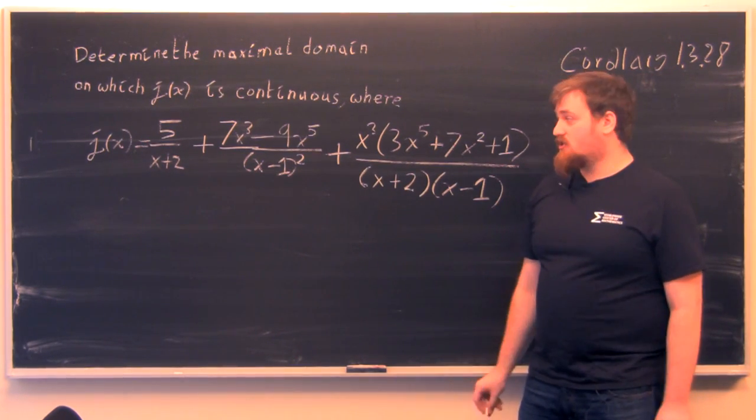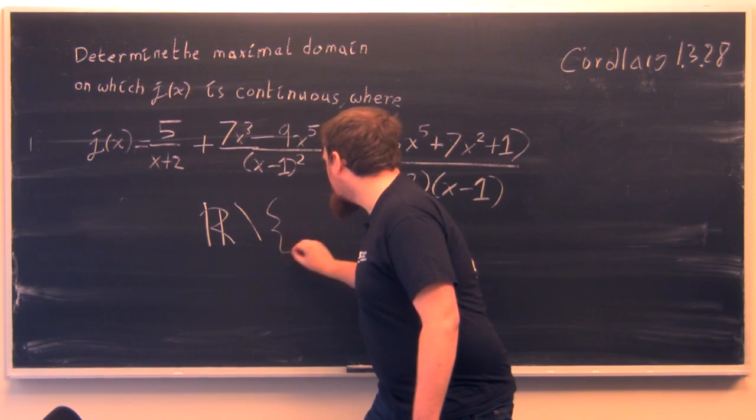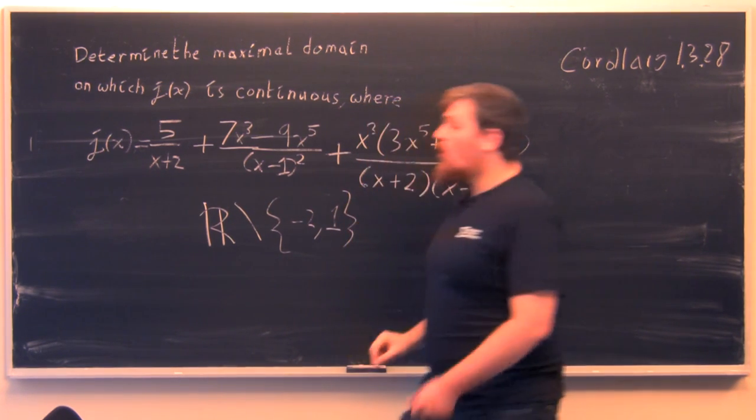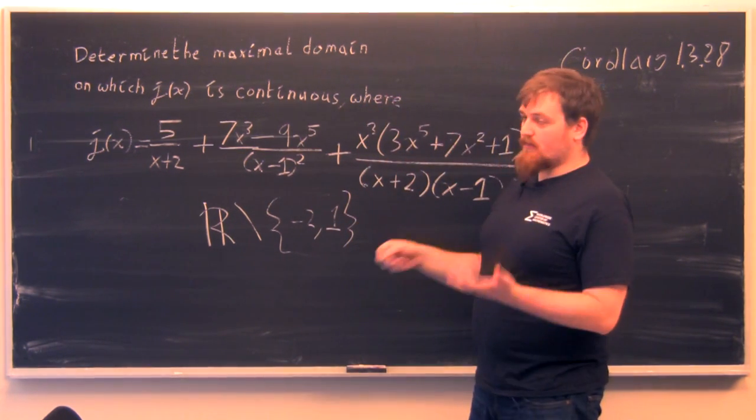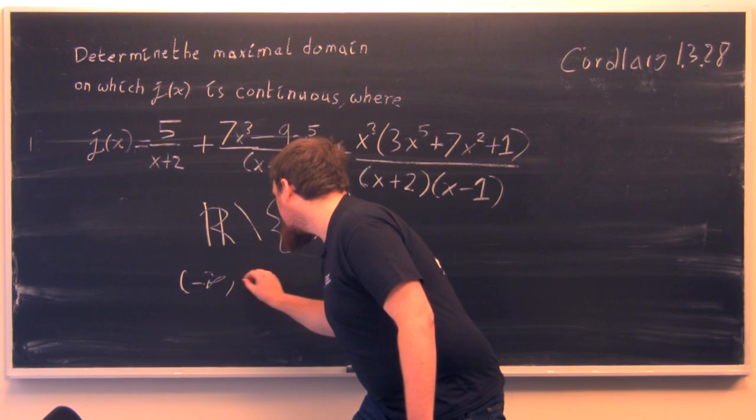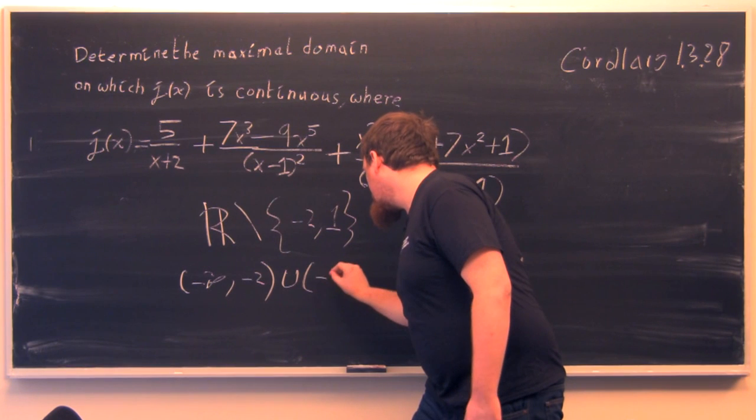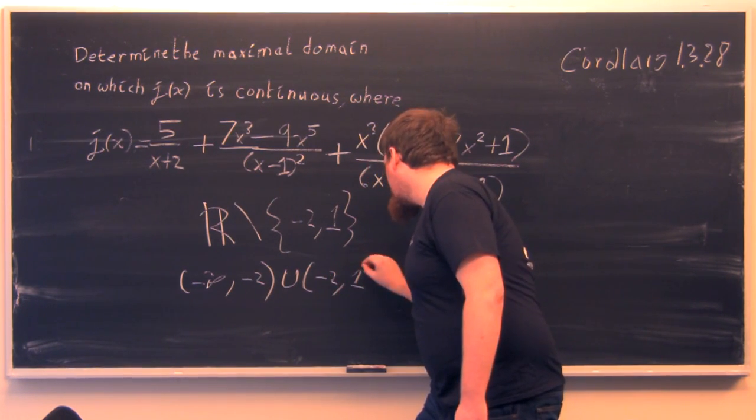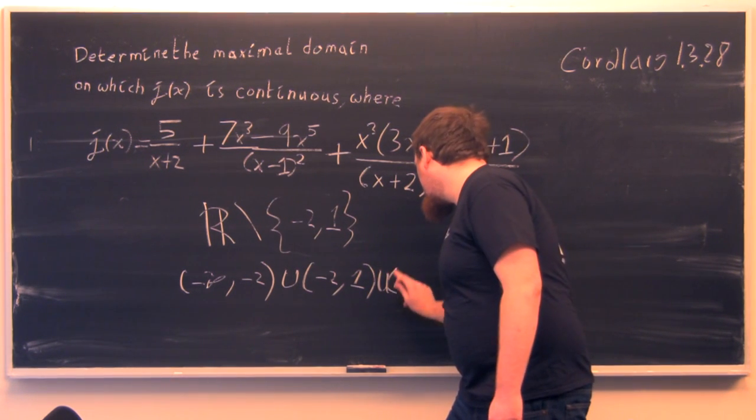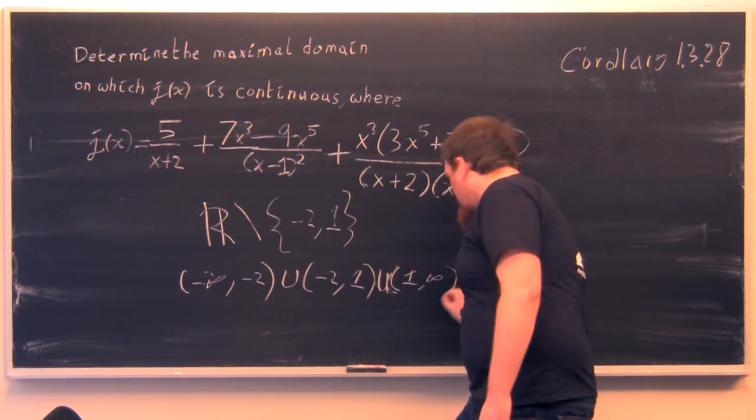If you wanted to write that using set-theoretic notation, you would write R without minus 2 and 1. Or if you wanted to write that using intervals, you would write the numbers less than minus 2, union the numbers between minus 2 and 1, union the numbers greater than 1.